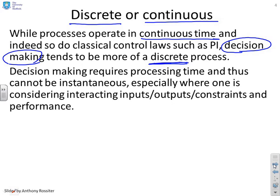Because decision making requires processing time or thinking time, and thus it cannot be instantaneous. And if you think about the context of predictive control, you might be dealing with a multivariable system which has interacting inputs and outputs, constraints, performance, and in order to handle all that information and come up with a decision, it cannot be done instantaneously.